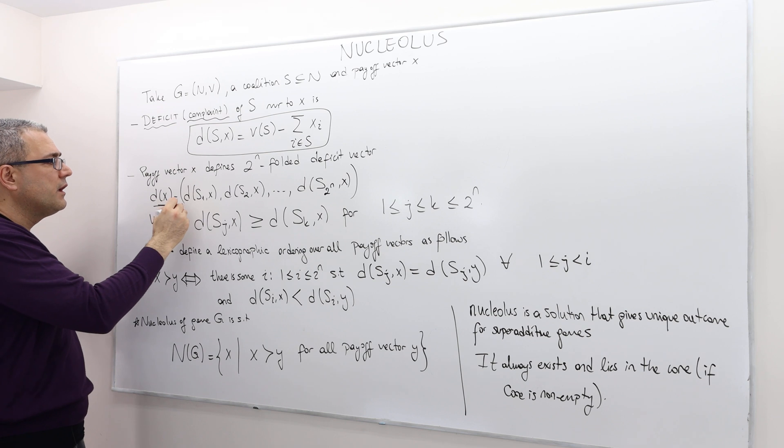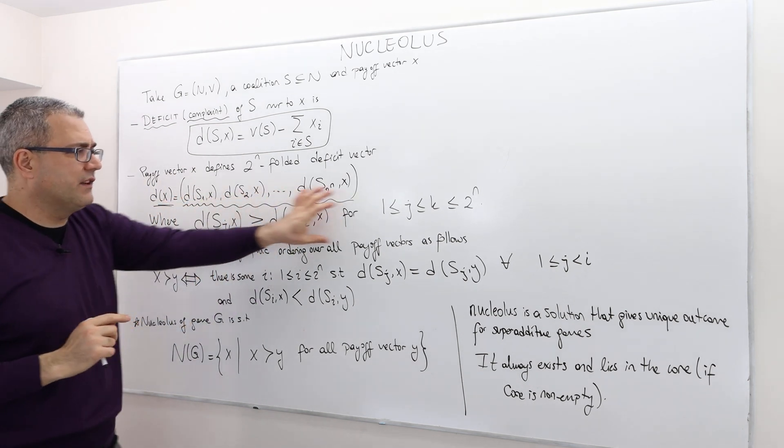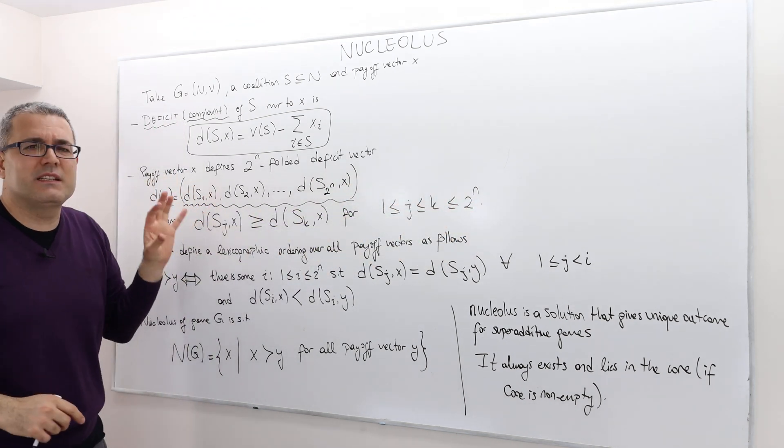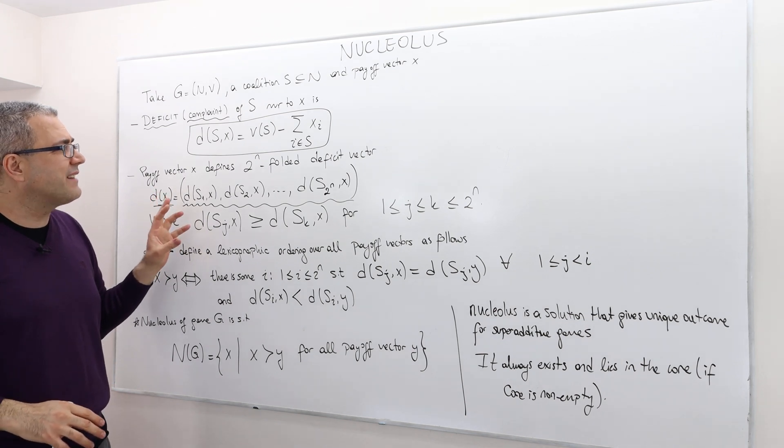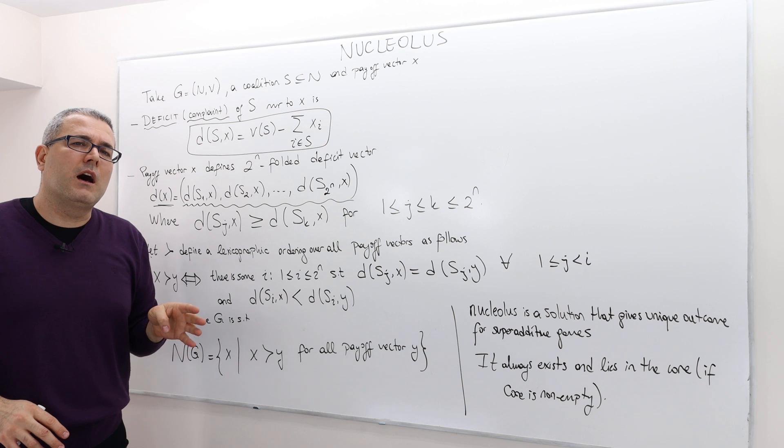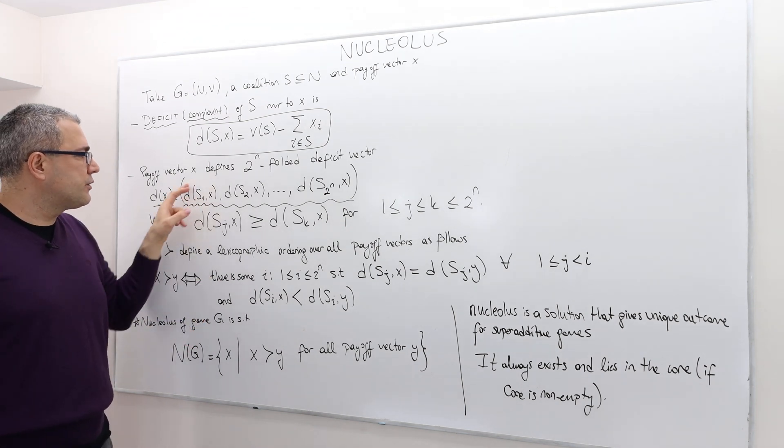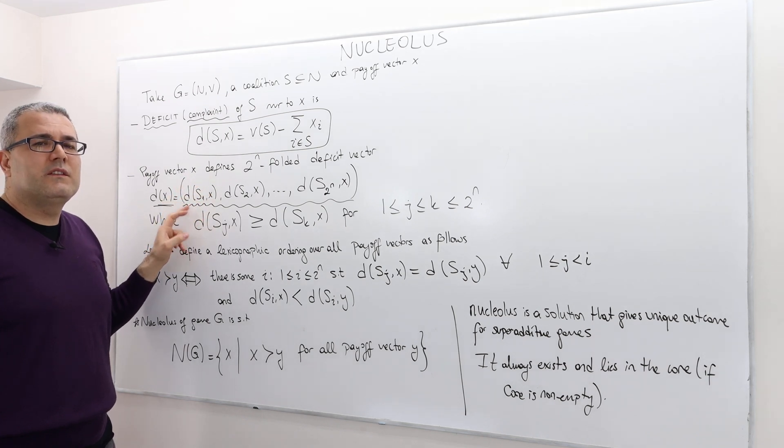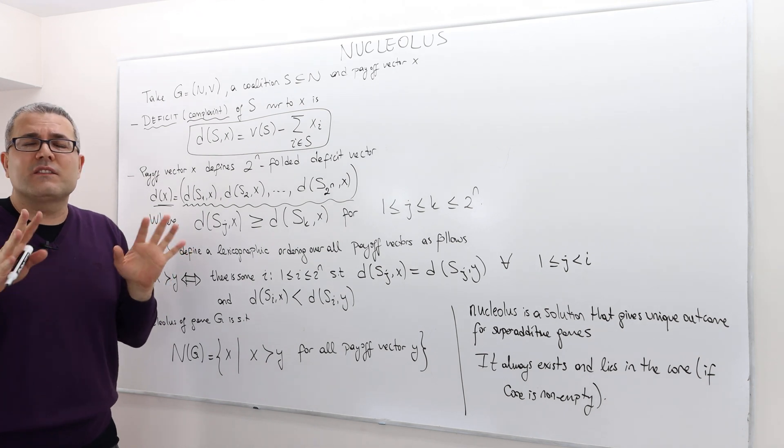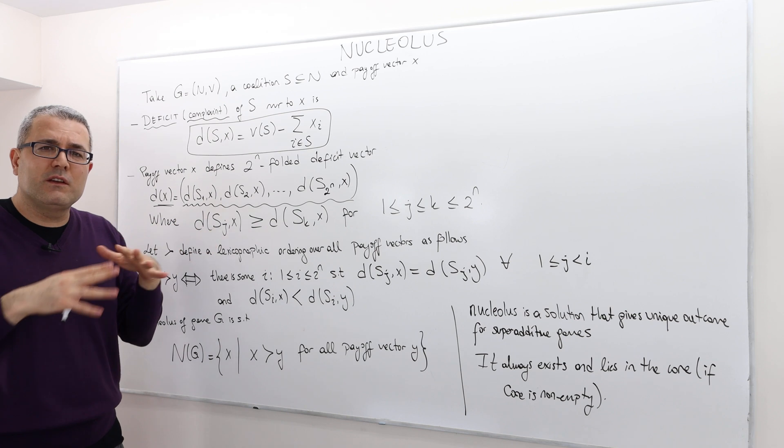However, the order here matters. It basically says the following: Look at the deficit or the complaint of all the coalitions, and then here, the first number is the amount of complaint, the highest complaint. It doesn't matter from which coalition it's coming from. We don't fix the coalitions.